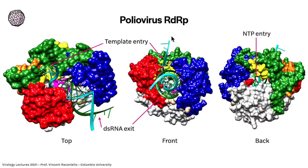A single strand goes in and comes out the front as a double-stranded RNA molecule, which is then pulled apart. Looking at the front view, the template goes into the top, curves around the active site, is polymerized, and exits as a double-stranded RNA helix. There's also a channel for NTPs on the back of this polymerase. NTPs go in through this opening into the active site — all four go in and out rapidly with no selectivity. Only when the right one is complementary to what's next on the template does it stay.